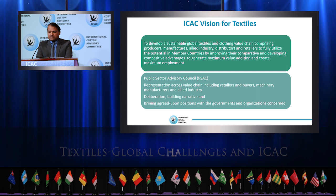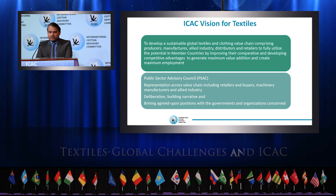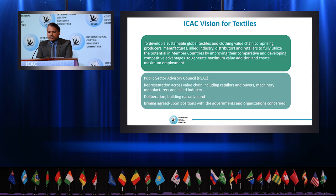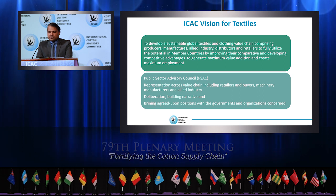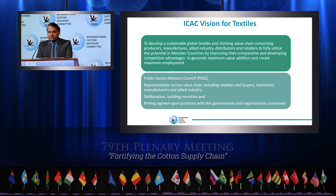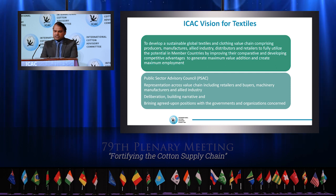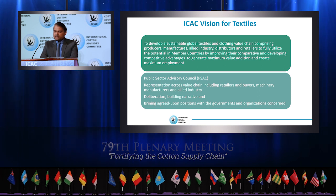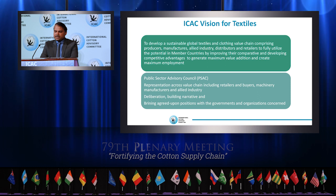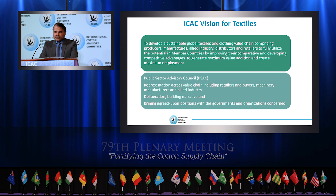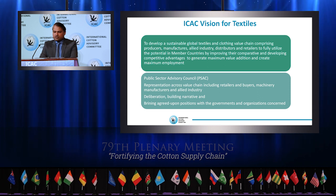ICAC is providing unprecedented services to the cotton sector — the cotton data book, fiber consumption, demand and supply, costing, pricing, and networking across the globe. Similarly, ICAC will develop a platform to share knowledge on textile value chains, support governments in formulating long-term policies, and share best sustainable practices. ICAC will also establish links with research institutes, universities, fashion houses, testing, and compliance organizations. ICAC's vision is to develop a sustainable global textiles and clothing value chain comprising producers, manufacturers, allied industry distributors, and retailers to fully utilize the potential of member countries, generate maximum value addition, and create maximum employment. ICAC is unique in that it now represents the entire value chain along with governments.